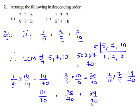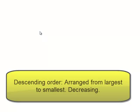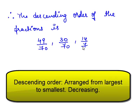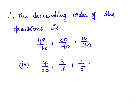49/70 is greater than 30/70, and 30/70 is greater than 14/70. Therefore, the descending order of the fractions is 7/10, 3/7, and 1/5.